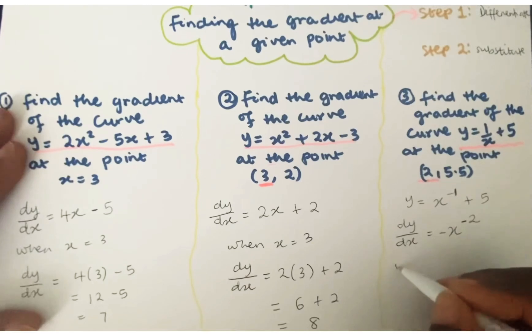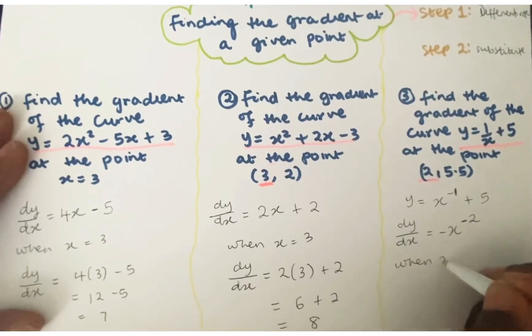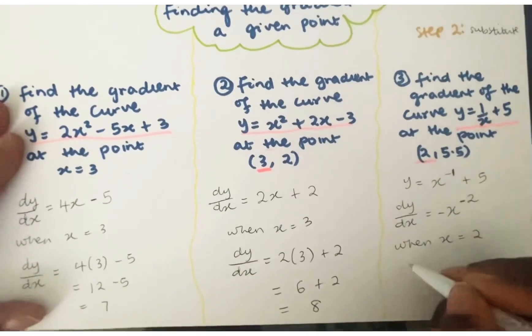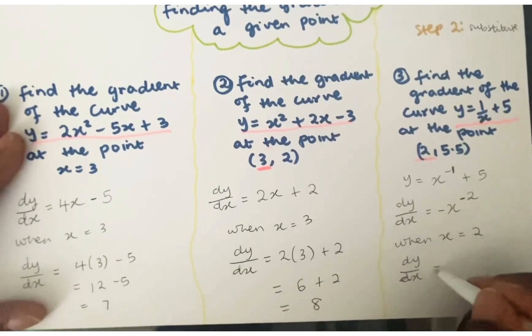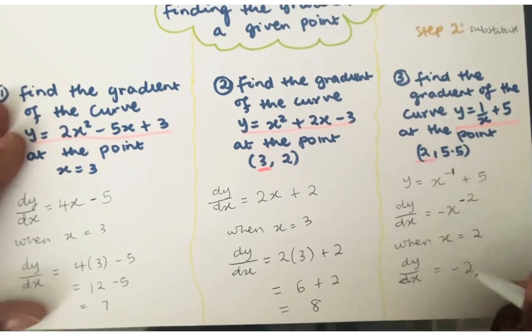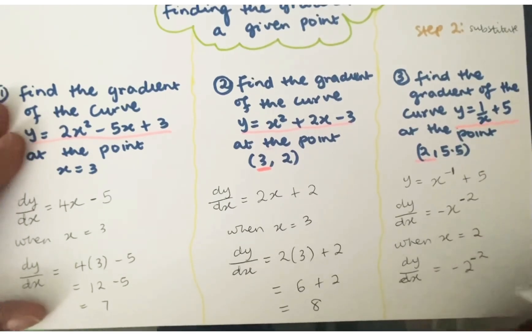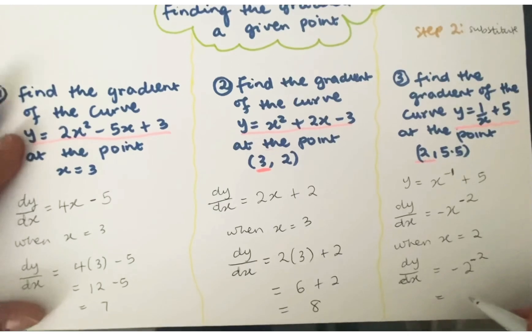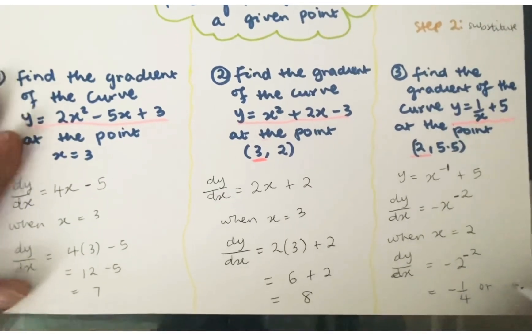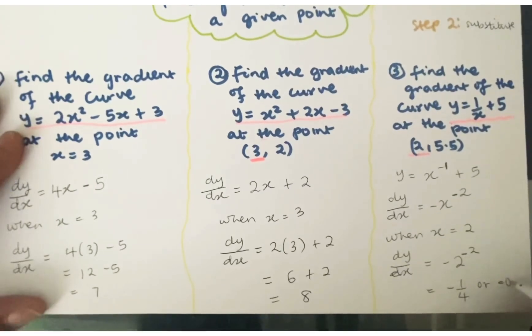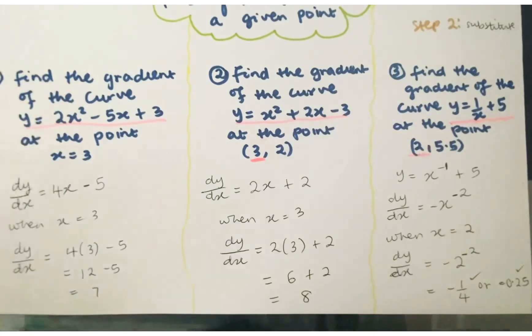So then we substitute. Now, when x is equal to 2, then dy by dx would be equal to negative 2 to the power of 2, which is equal to negative 1 over 4 or negative 0.25. They will all be correct.